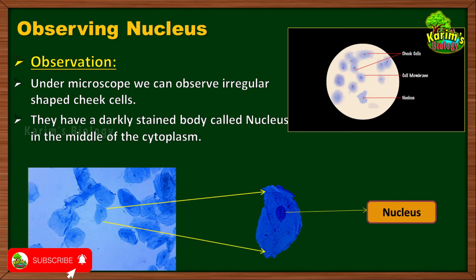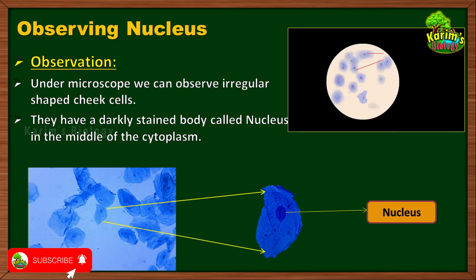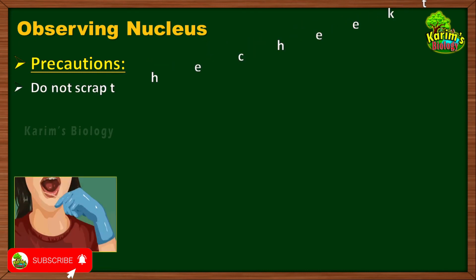This is how we observe cheek cells along with the nucleus under the microscope. But there is one more important thing to keep in mind while conducting this experiment: precautions. You have to take certain precautions, because a small mistake during the experiment can spoil the entire result. Let us now discuss these precautions.